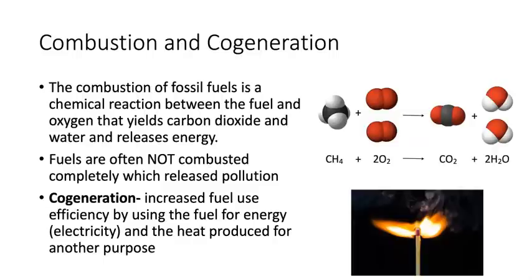The process used with coal and oil is called combustion — a chemical reaction where the fossil fuel reacts with oxygen to release energy. When combustion is incomplete, pollution is released including carbon dioxide, water vapor, and other particulates, making the process both inefficient and polluting. One way to increase efficiency is cogeneration: when burning coal at a power plant, excess heat produced in the process could be used for another purpose, such as heating nearby buildings.